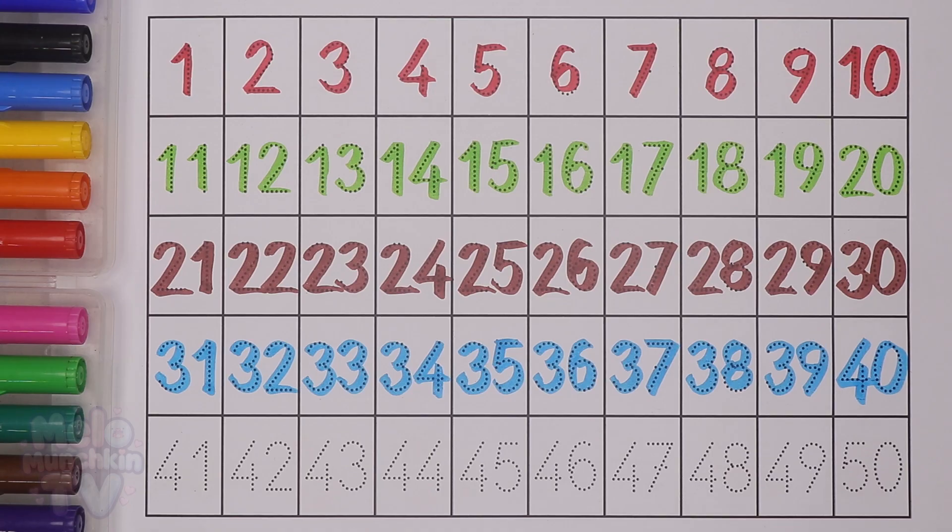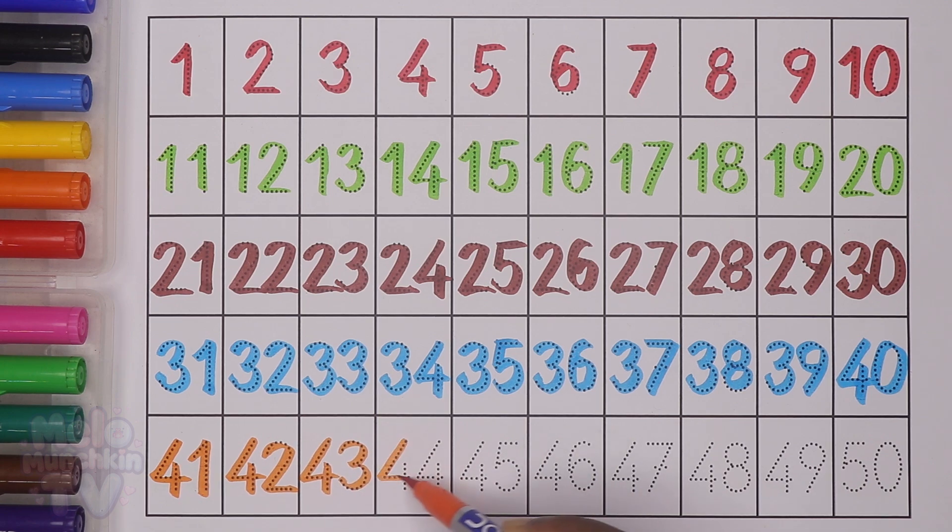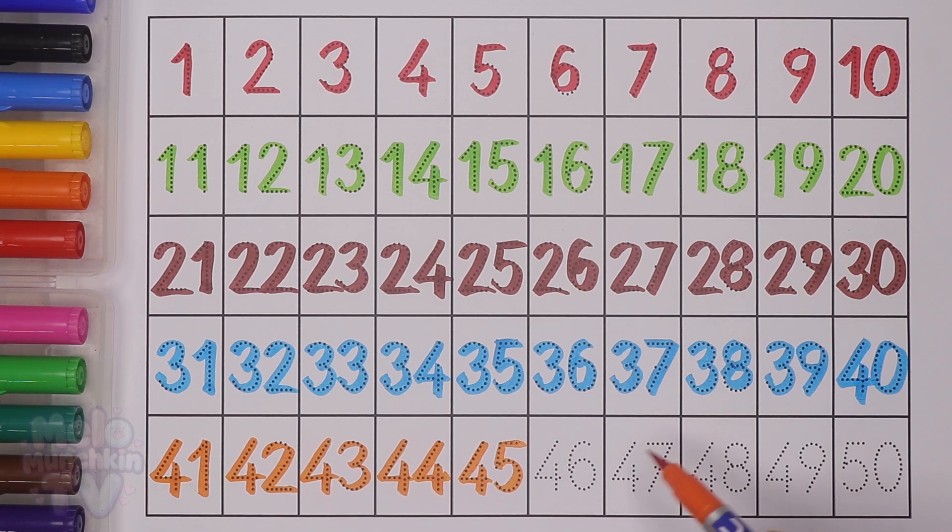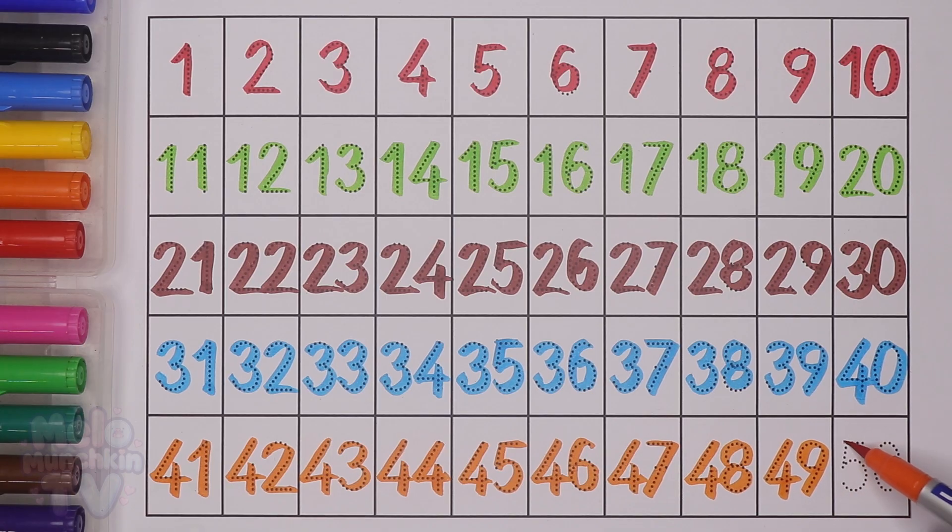And lastly I'll take orange color to write the last line. After 40: 41 forty-one, 42 forty-two, 43 forty-three, 44 forty-four, 45 forty-five, 46 forty-six, 47 forty-seven, 48 forty-eight, 49 forty-nine, 50 fifty.